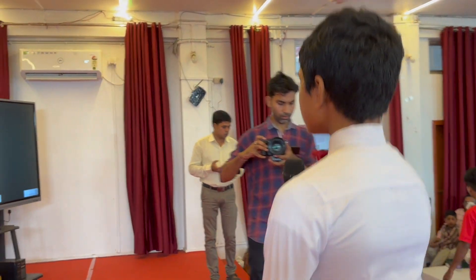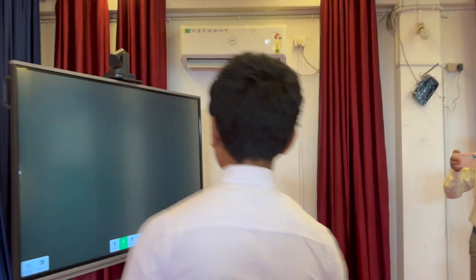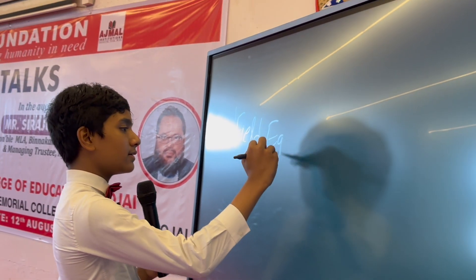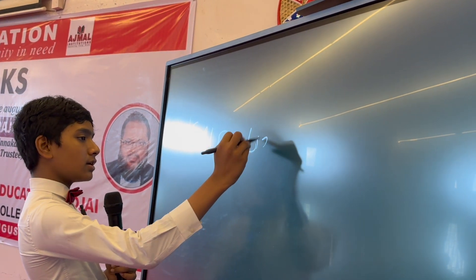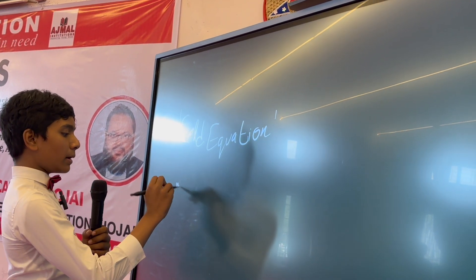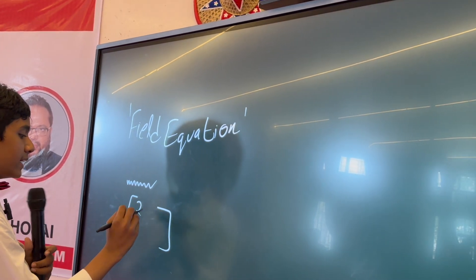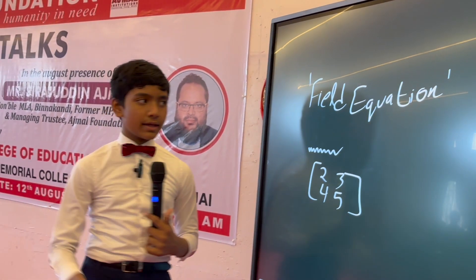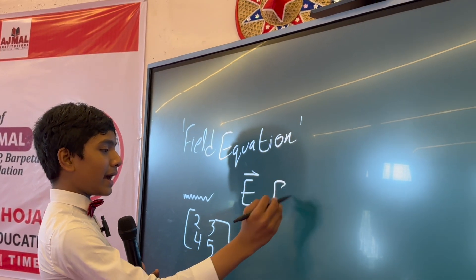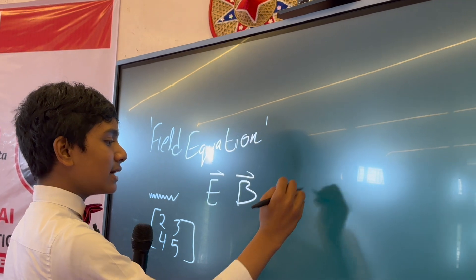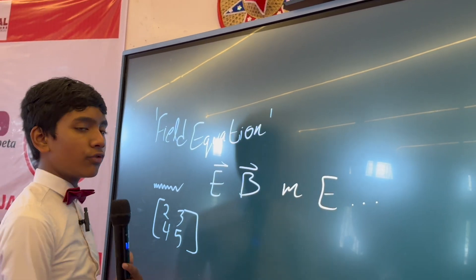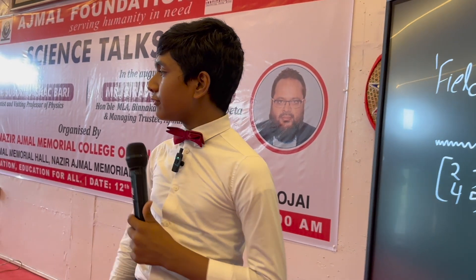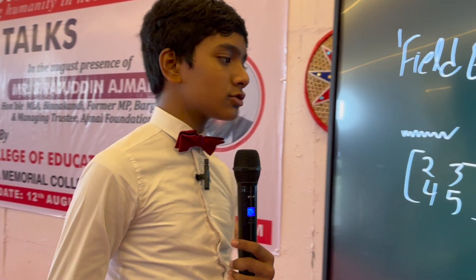Essentially what relativity does is it's all based around what we call the field equation. This field equation is just an equation with a bunch of variables, and most of these variables are just matrices of some numbers. These numbers encode everything from the electric field to the magnetic field to mass to energy and so on and so forth — they're like little encodings of everything going on in the universe around us.